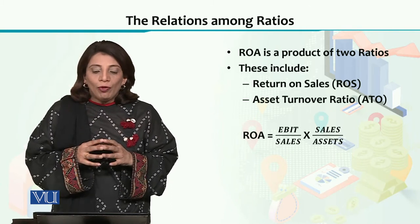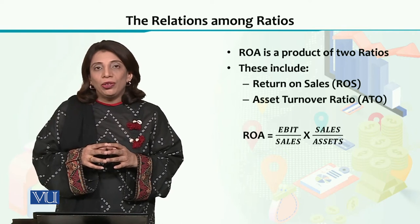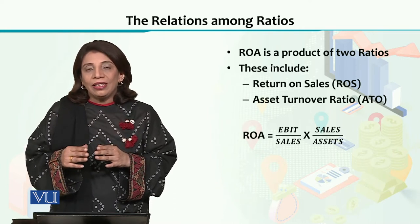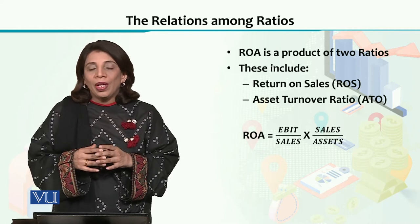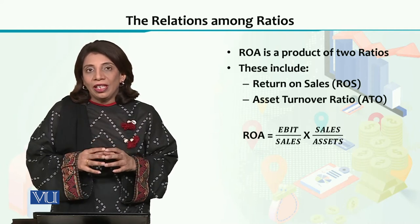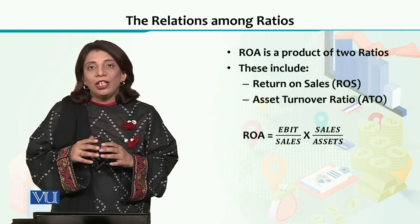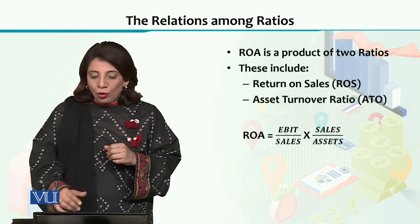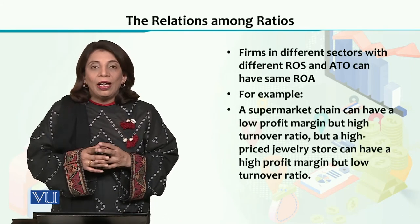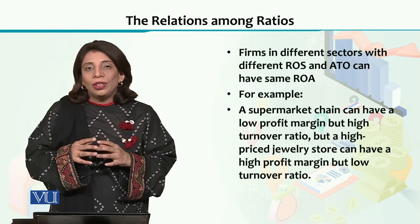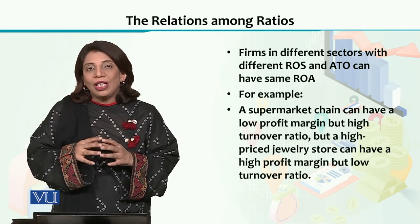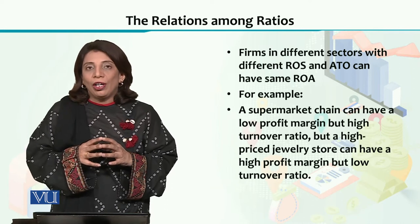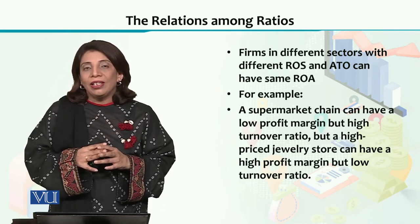If we look at the formula, return on sales is calculated as earnings before interest and taxes divided by the overall sales of a firm. The asset turnover ratio is a ratio of sales to total assets. Multiplying these two gives us ROA, the return on assets. It does not mean that all firms of the same size should always come up with the same ROA value, since both components can vary.